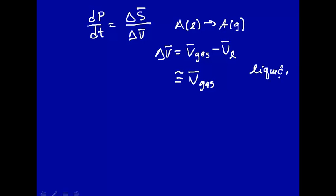Why? Liquid per mole has a smaller volume. So the partial molar volume, the volume occupied by one mole of the liquid, is much less than the gas. So we can approximate the molar volume change as just the partial molar volume of the gas itself.